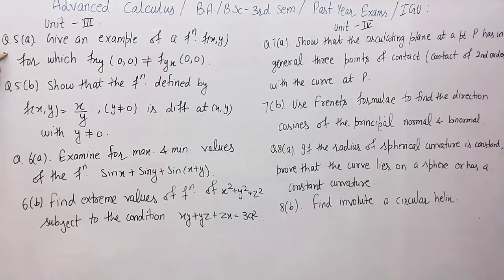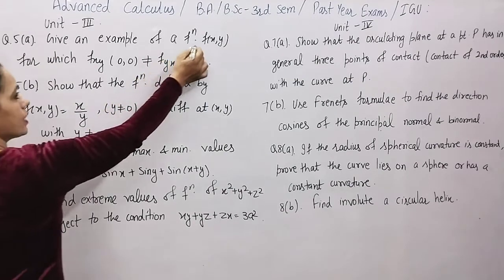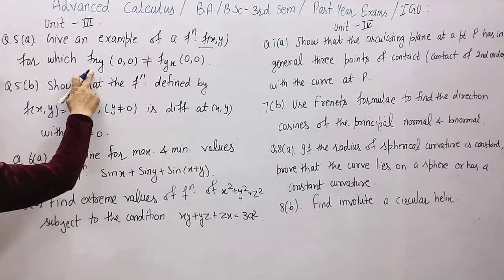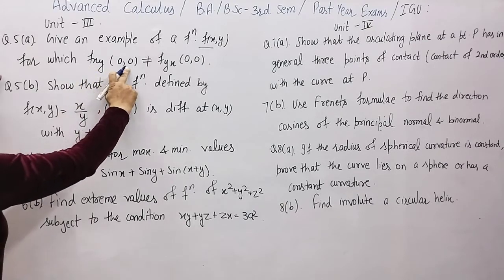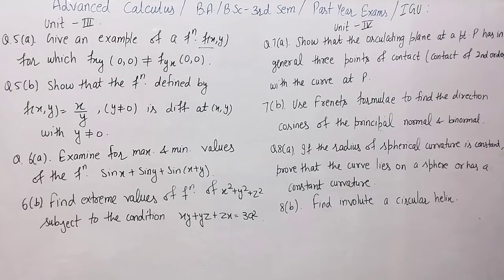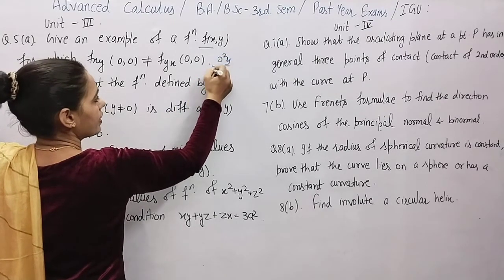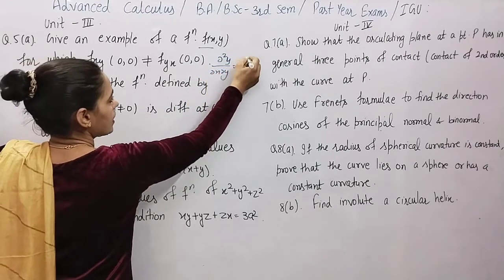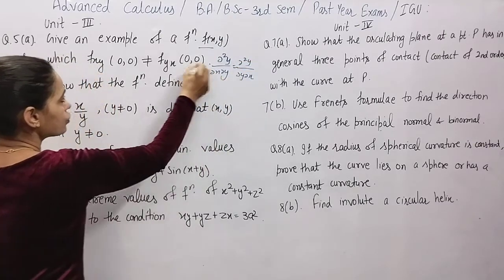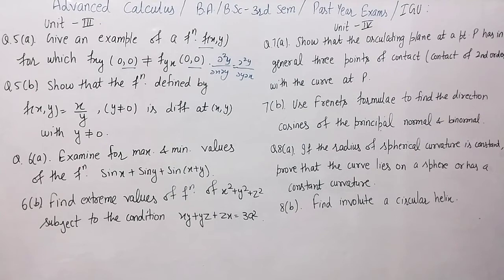Unit three: Question five, part (a) — Give an example of a function f(xy) for which the partial derivative f_xy at (0,0) is not equal to f_yx at (0,0). Basically we show that ∂²v/∂x∂y ≠ ∂²v/∂y∂x at the point (0,0). Part (b) — Show that the function defined by f(xy) = x/y, where y ≠ 0, is differentiable at (x,y) with y ≠ 0. Both equations come from chapter five.